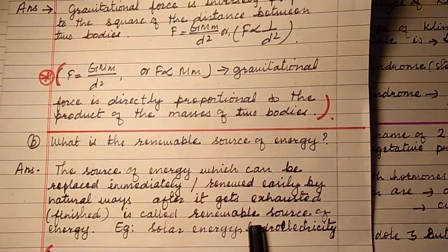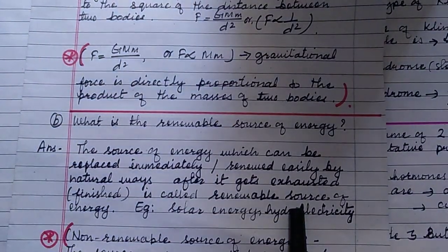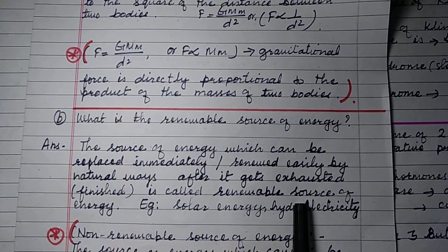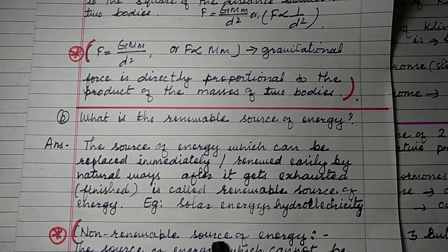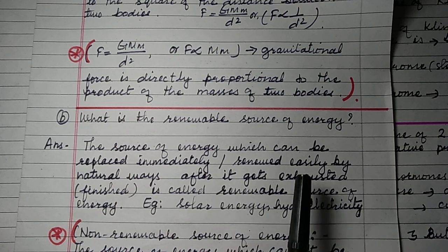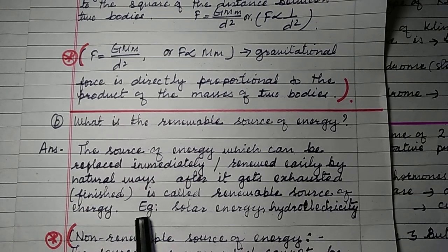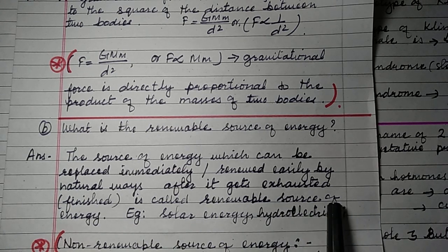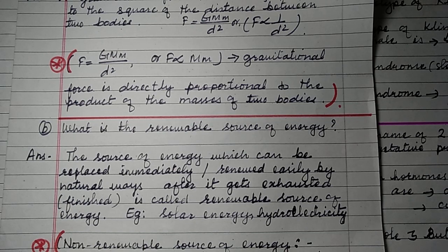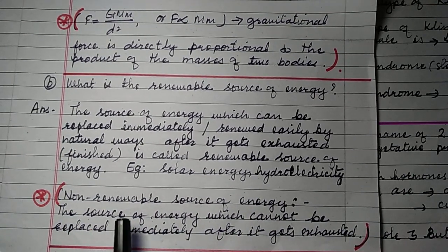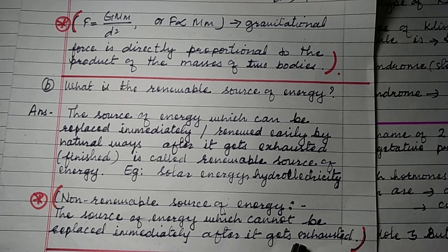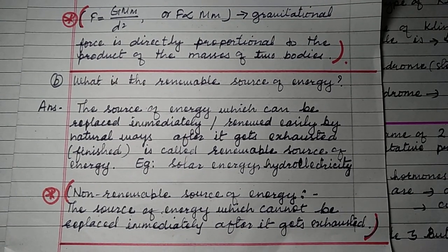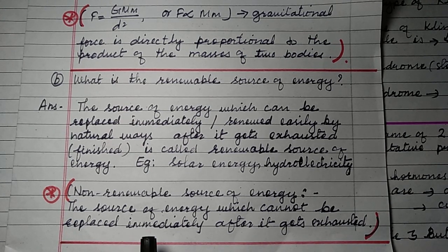Question number 1B: What is the renewable source of energy? The source of energy which can be replaced immediately or renewed easily by natural processes after it gets exhausted is called renewable source of energy. Examples: solar energy, hydroelectricity, biomass energy, etc. A similar question: non-renewable source of energy cannot be replaced immediately after it gets exhausted and is stored in nature over a long period of time.